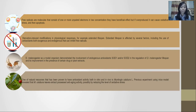Oxidative stress plays an important role in the occurrence of apoptosis. Apoptosis is a programmed cell death, but it is essential for normal function. In living things, cell death can be triggered by several factors.